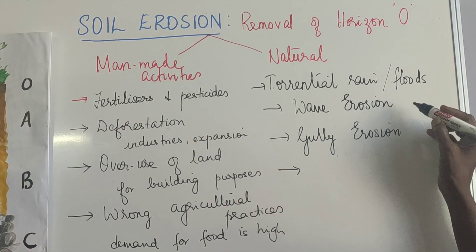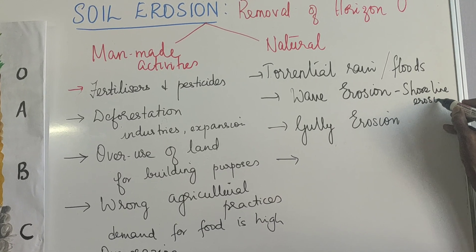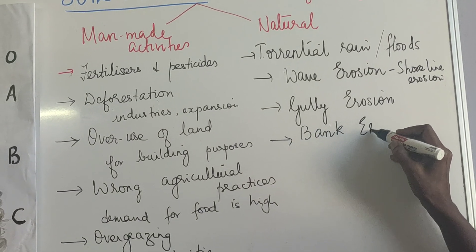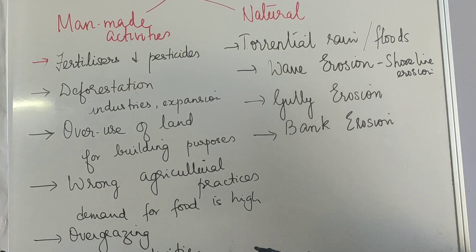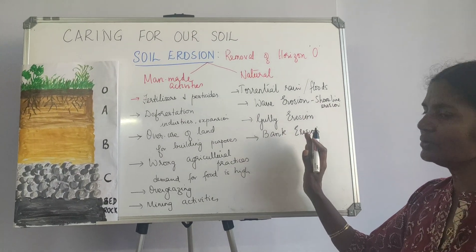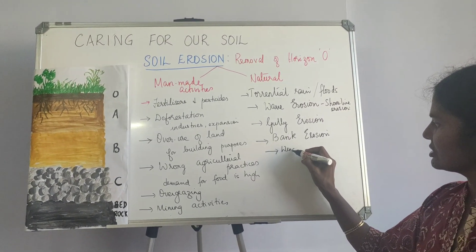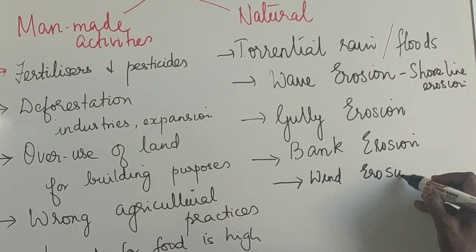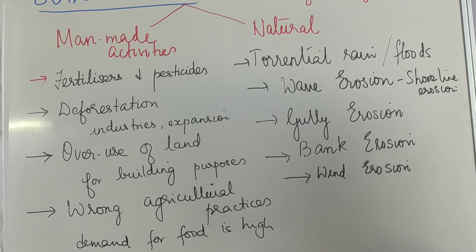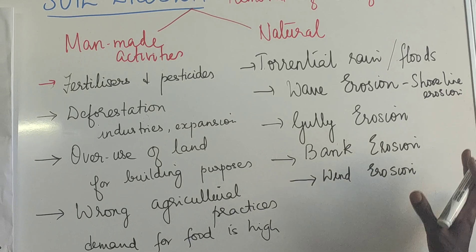Wave erosion is also called shoreline erosion. Then you have bank erosion at river banks — sometimes a river will change its course, called meandering, and at that time the soil is completely washed off along with it. Then you have wind erosion, where a gust of wind can move a heap of soil completely from one place to another. These are the different forms of natural erosion.